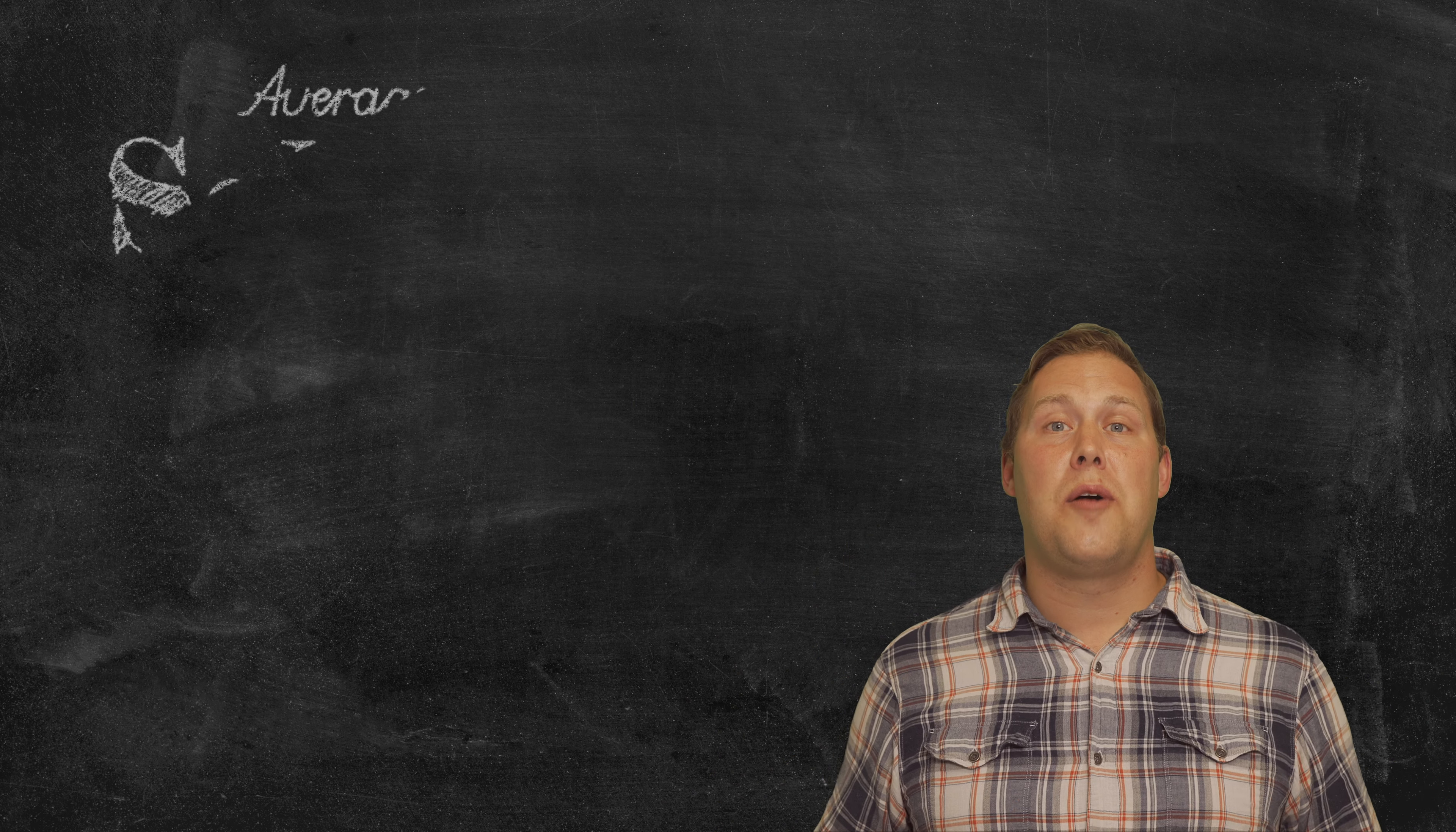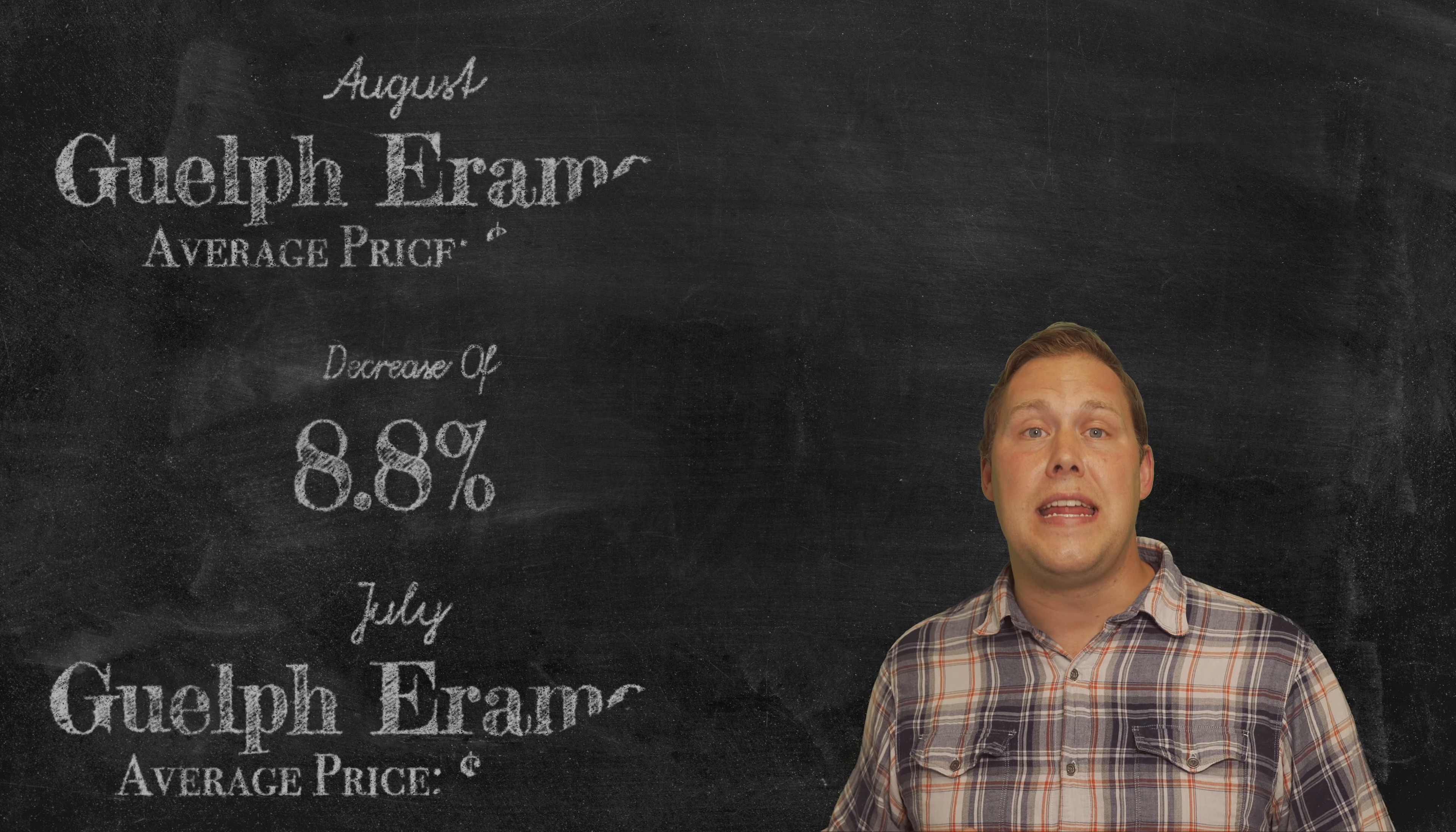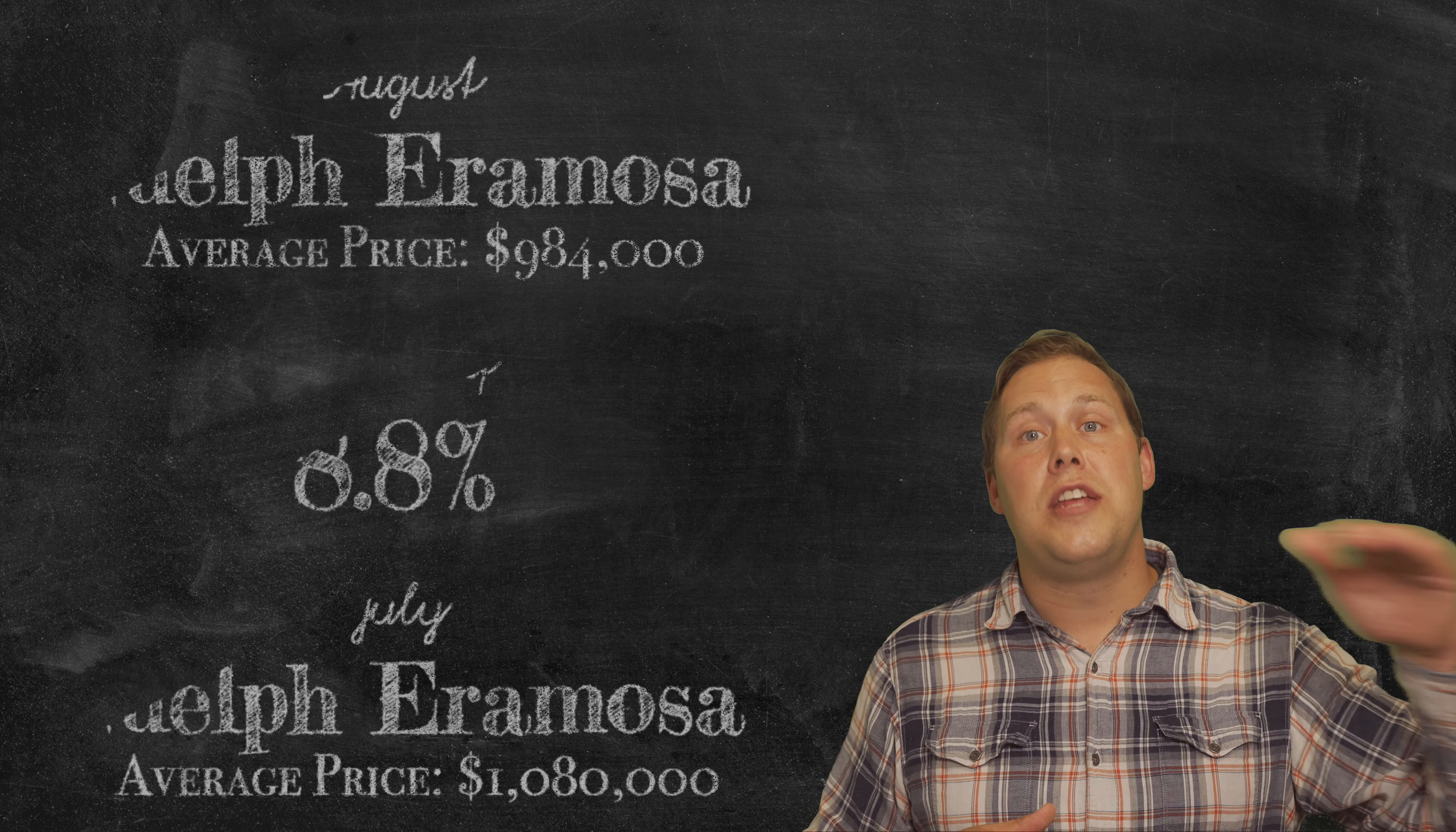Our average sale price for August was $984,000, which is a decrease of 8.8% from last month, because last month was sitting about $1,080,000. Now what that means is the market hasn't gone down. All it means is we've seen higher priced homes sell in July than we did in August.